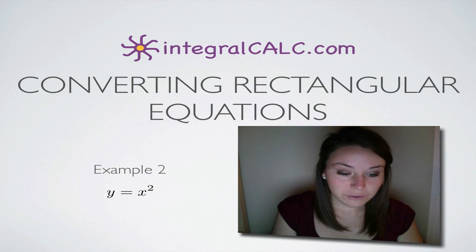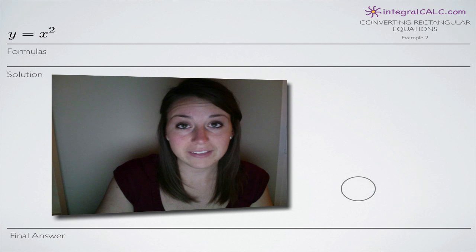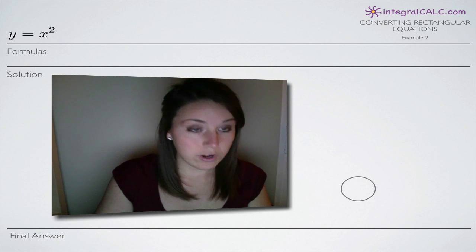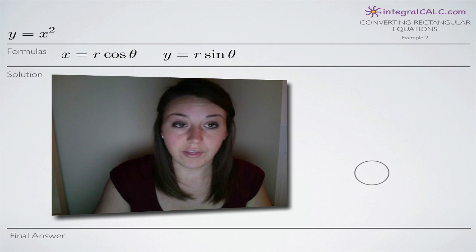The rectangular equation we're given is y equals x squared. By rectangular equation, we just mean an equation in terms of x and y. We're going to be converting this to a polar equation in terms of r and theta.